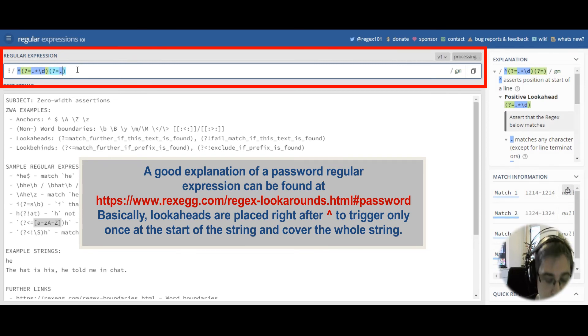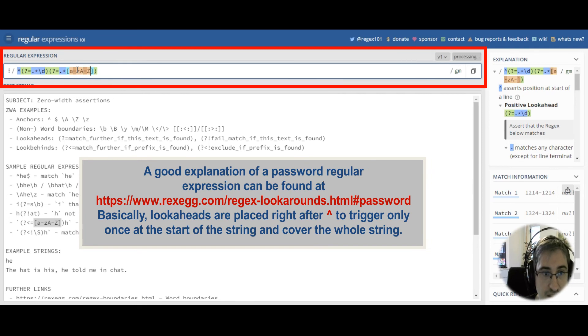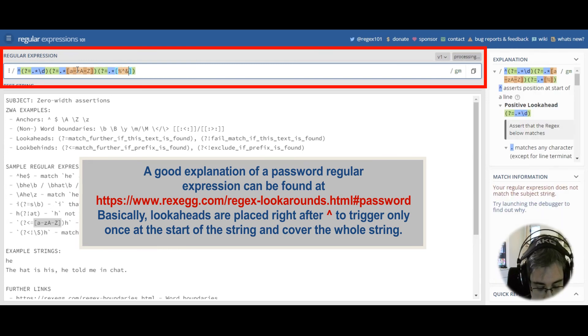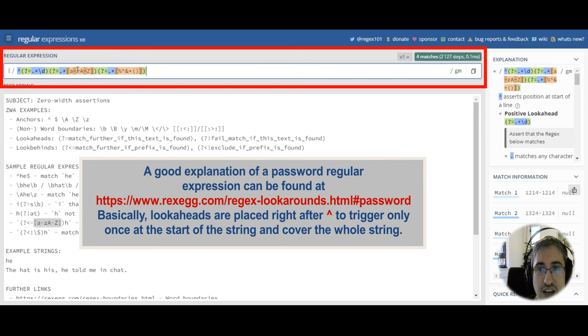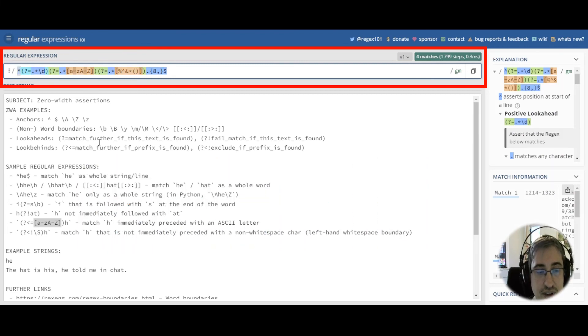This is why common password checking patterns look like this. We are requiring at least one digit, we also require at least one letter, and we may also require some special characters of your choice. Just type any. And then we can require the length to be at least eight characters, for example. And this is a common example of a password checking regex. And you see three separate look-aheads that are chained at the beginning of the string.